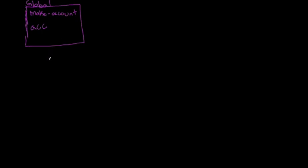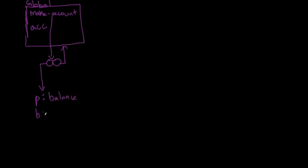Let's talk about make-account. Because make-account is a procedure, we need a procedure object, which is demonstrated by the procedure object I'm drawing here. Make-account points to this procedure object. The right side of it points back to the frame it's defined in, and the left side points to the parameter and body of the procedure. The parameter that make-account takes is a single balance. However, the actual body is more complicated — in make-account, the body is made up of three defines.